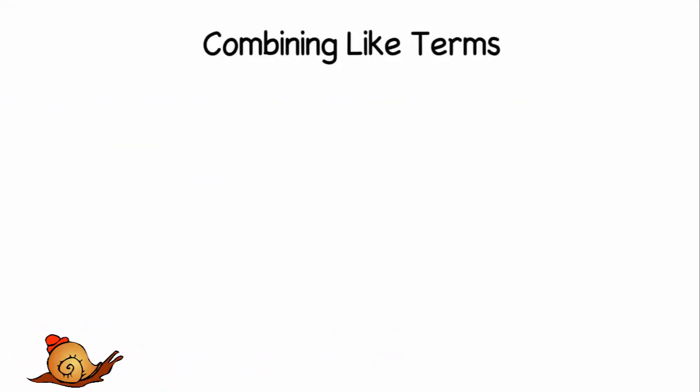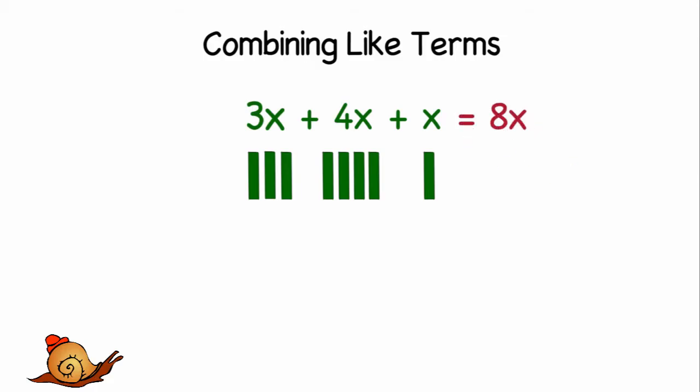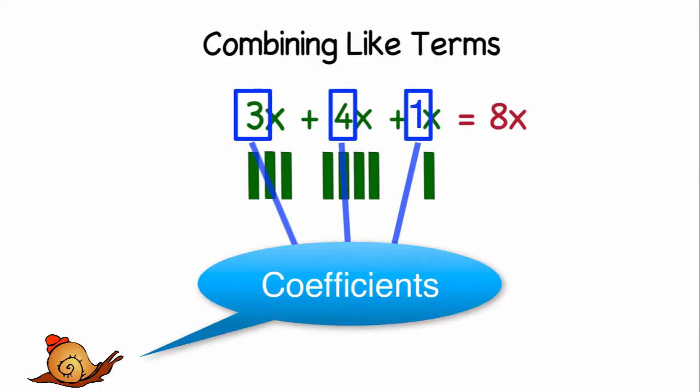So let's look at the expression 3x + 4x + x. To simplify that, we're going to need to add the like terms. Well, 3x is the same as saying x + x + x. And when we add 4x to that, we are adding an additional x + x + x + x. And then we'd add one more x at the end. That would give us a grand total of 8x's. So to add like terms, we just need to add the coefficient, which is usually the number part, and the variable part always stays the same.